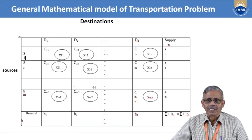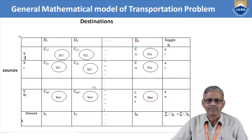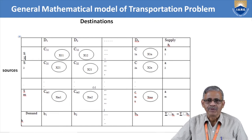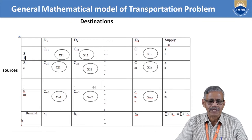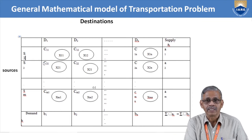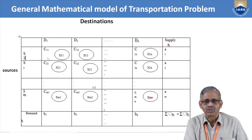The general mathematical model of the transportation problem is as shown. We have sources S1 to SM and destinations D1 to DN. For each source-to-destination pair, there is a transportation cost shown by C_IJ. For example, cell C11 represents transportation from source 1 to destination 1, C12 from source 1 to destination 2, and so on for all cells.